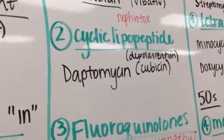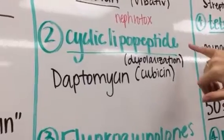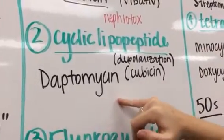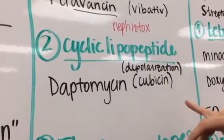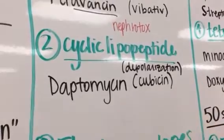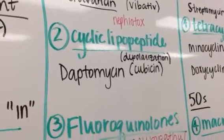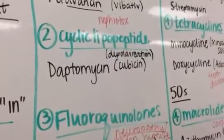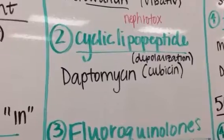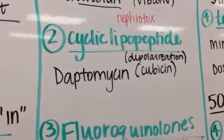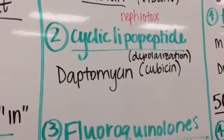Moving into altered cell membrane — this is our cyclic lipopeptide, specifically daptomycin. This can also be used in place of vancomycin. The main difference is that daptomycin does not concentrate in the lung because the lung has a specific surfactant that deactivates it, so it can't be used for healthcare-acquired pneumonia. It works by causing depolarization in the cell, causing it to lose its structure and fall apart.